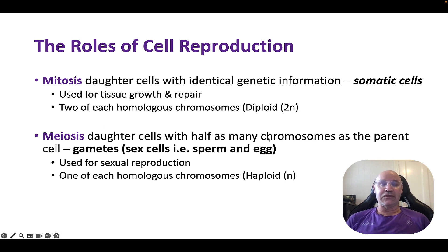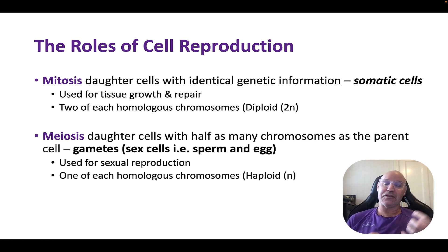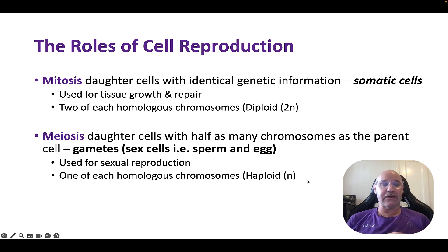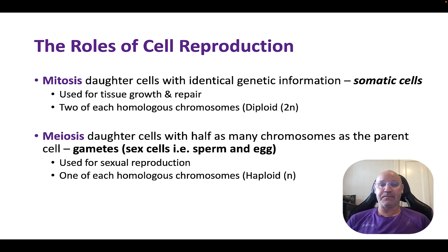Meiosis is the process of producing the gametes, which are the sex cells — the sperm and the egg in mammals. They have half the number of chromosomes because they're involved in sexual reproduction. So because it's half the number, one of each of the homologous chromosomes, we call that haploid, or N. The sex cells have the haploid number N, and all other body cells have the diploid number 2N.